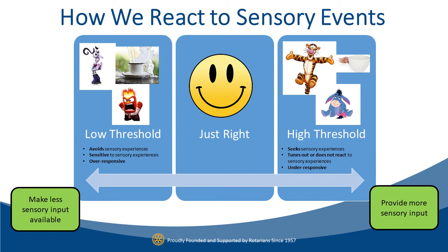Over-sensitivity can look two different ways: fear or anger. Signs of over-responding or avoiding sensory input can look like covering ears, avoiding certain textures, not liking to get messy, poor tolerance with haircuts or hair brushing, and picky eating.